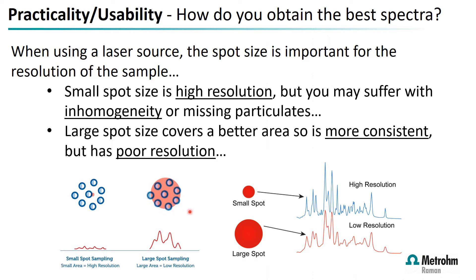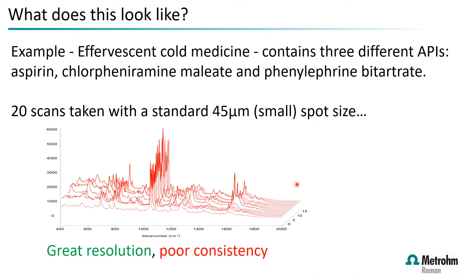A larger spot size covers a bigger area and is more representative of the sample, but can lead to poorer resolution in the final spectra. As an example, this effervescent cold medicine contains three different APIs. Taking 20 scans using a fixed laser spot size across an entire bag: the resolution is good and most peaks are in the same location, but the consistency is not ideal using this fixed laser.